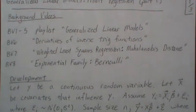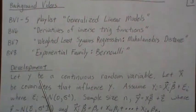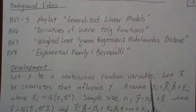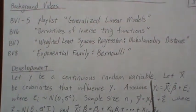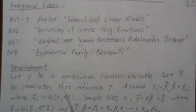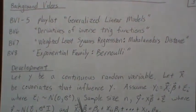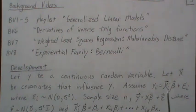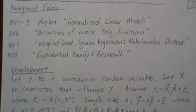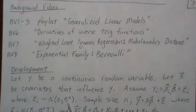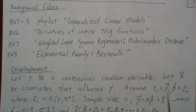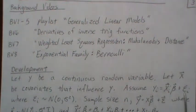Now, a quick development for probit analysis. Let Y be a continuous random variable. I already know you're thinking, wait, probit is for Bernoulli random variable, 0, 1. Yes, we're getting there. But this is the general development for probit regression. Let Y be a continuous random variable, and let X be the covariates that influence Y.